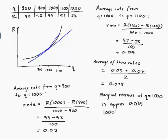Marginal revenue at Q equals 1000 is approximately 0.035 thousands of dollars per item, i.e., that would be $35 per item.